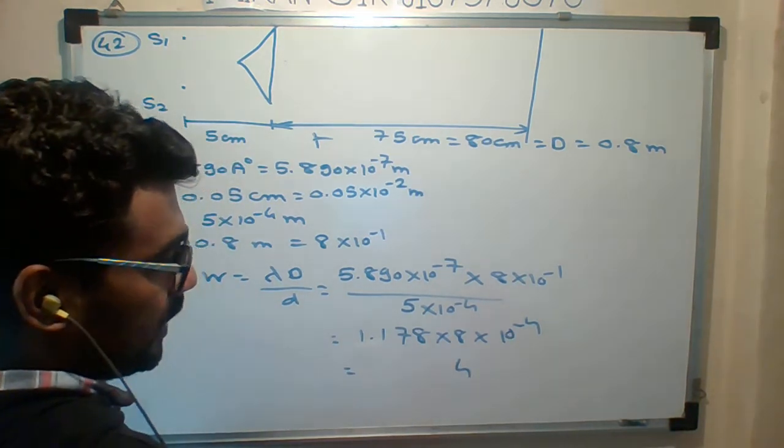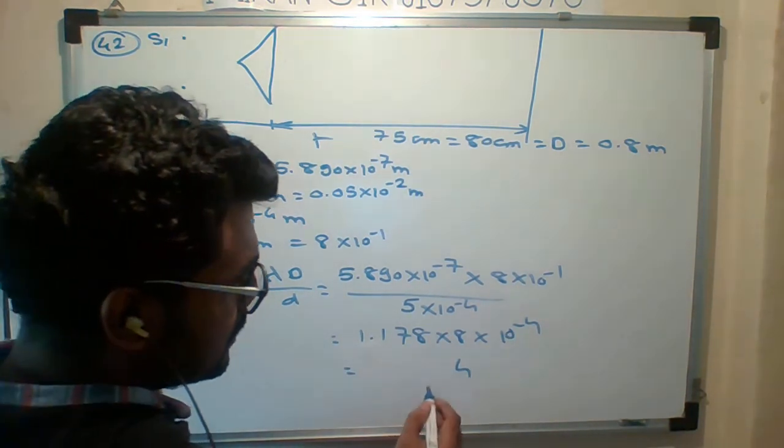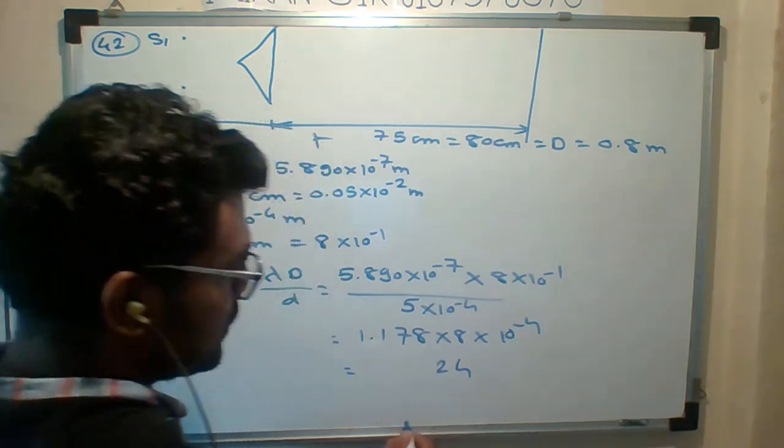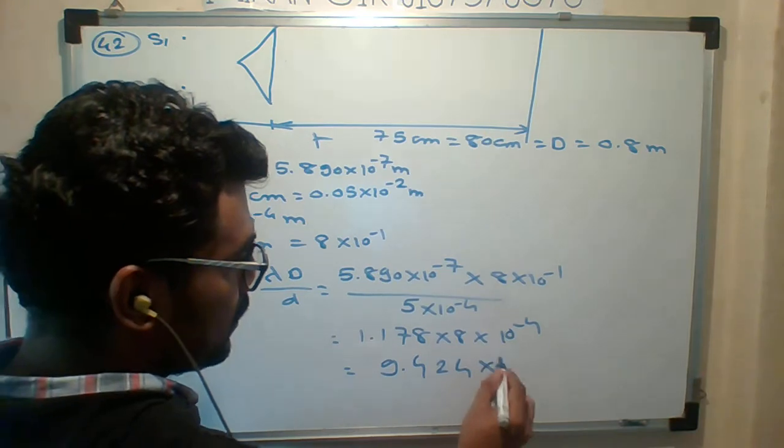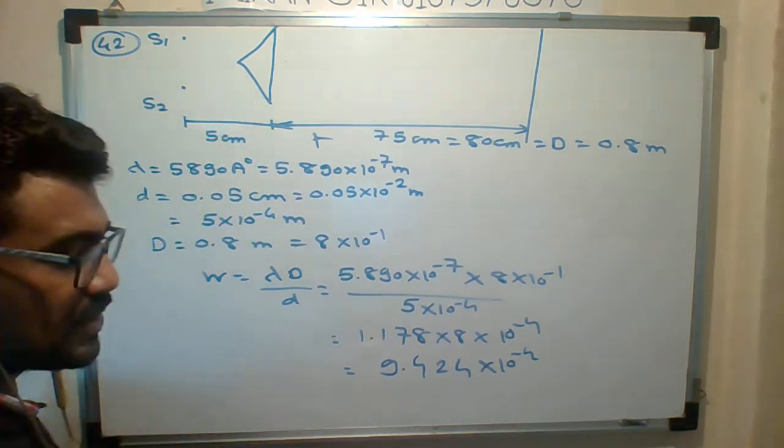8 times 8 is 64. 8 times 7 is 56 plus 6 is 62, carry 6. 4 into 5... The result is 9.424 into 10 to the minus...